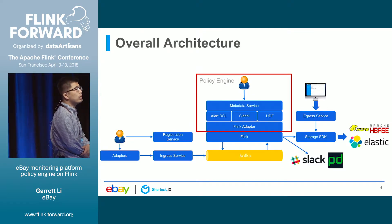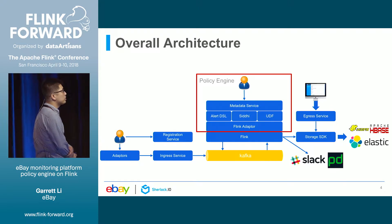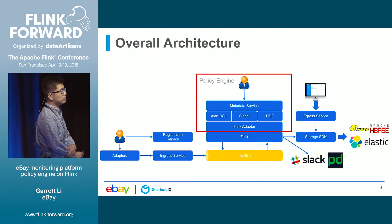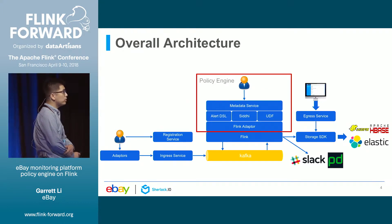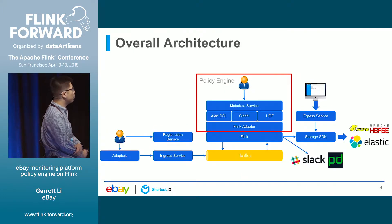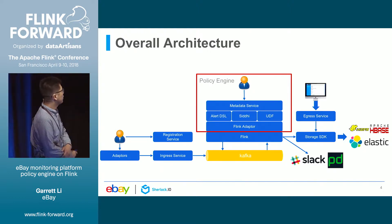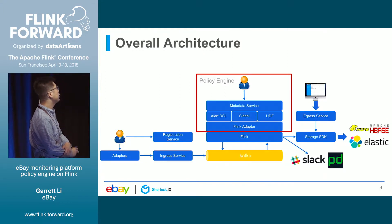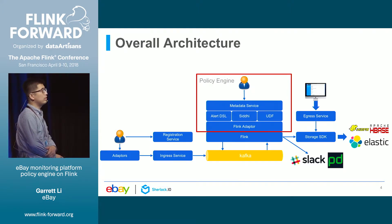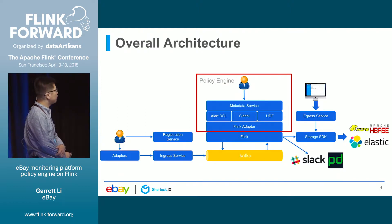For the egress part, we have two major components. One is the ingress service, which is an HTTP-based service to query the data from our monitoring platform. And we have another, which is built on top of Kibana and integrated with our ingress service to visualize the metrics, events, and logs. On the middle part, it is the processing part. We have two components: Flink and the policy engine. Flink, as you all should already know, is the high-throughput, low-latency, and stateful stream processing engine.